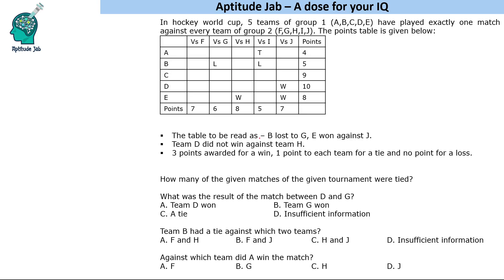Now, how to read the table: 'L' means lost. For example, B lost to G. And E won against J. You have to read win, loss, or tie in the horizontal direction. So if B lost to A, that is 'L' for B, which is a win for G and a loss for B — win for I, loss for J. This is how we read the table horizontally.